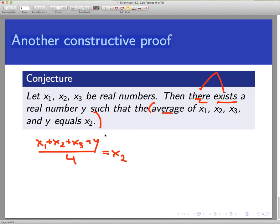I'm just going to build or construct the y. So let's see if I can get there. If I cross-multiply here and multiply both sides by 4, just a little arrow here to indicate a step, I'd have x₁ + x₂ + x₃ + y = 4x₂. And that's just by algebra.